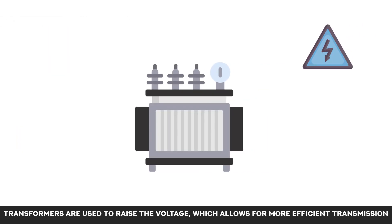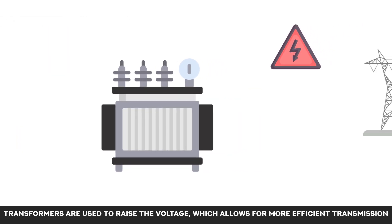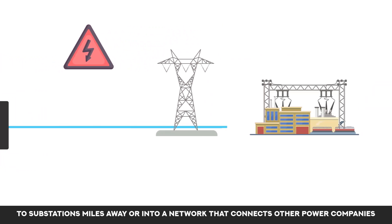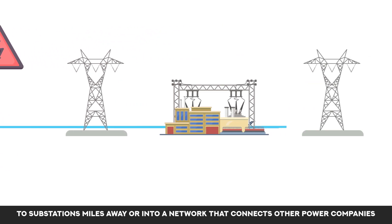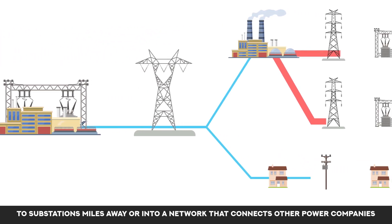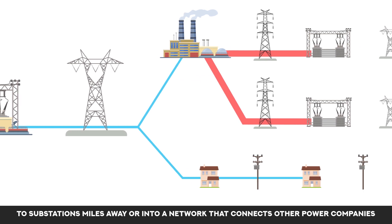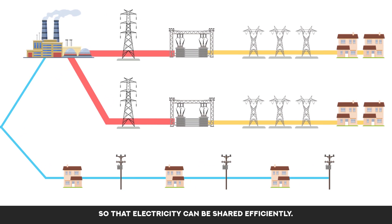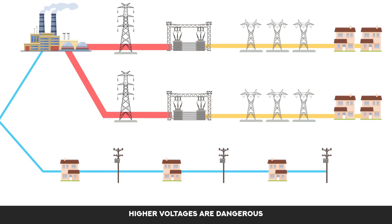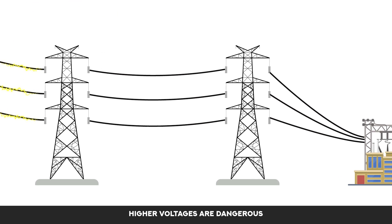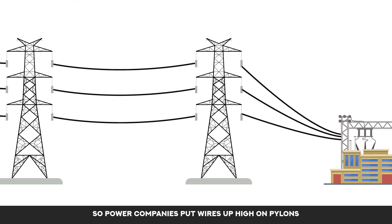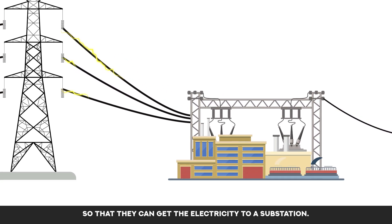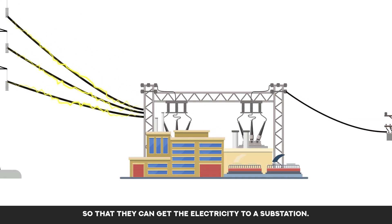Transformers are used to raise the voltage, which allows for more efficient transmission to substations miles away, or into a network that connects other power companies so that electricity can be shared efficiently. Higher voltages are dangerous, so power companies put wires up high on pylons so that they can get the electricity to a substation.